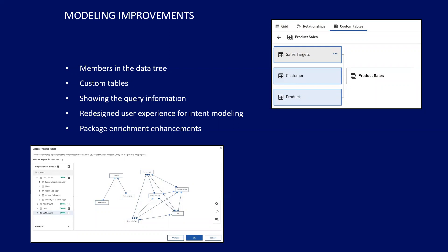Some modeling additions: members in the data tree, custom tables you can create when you have data that didn't previously exist. You can show query information — something only available in the package before, now available in data modules. There's a redesigned user experience for intent modeling, where AI helps auto-join things based on what data you're looking for. There are also packet enrichment enhancements to change the data when you bring it in.